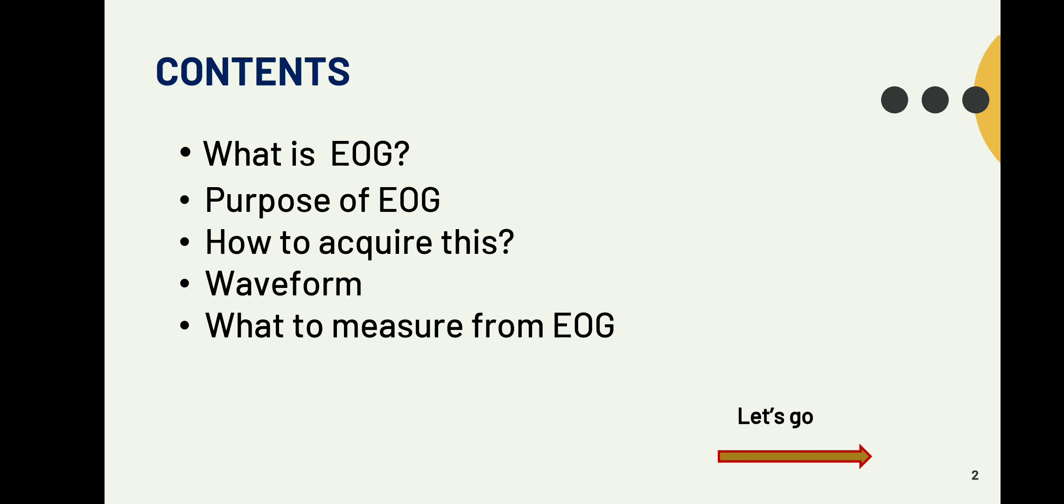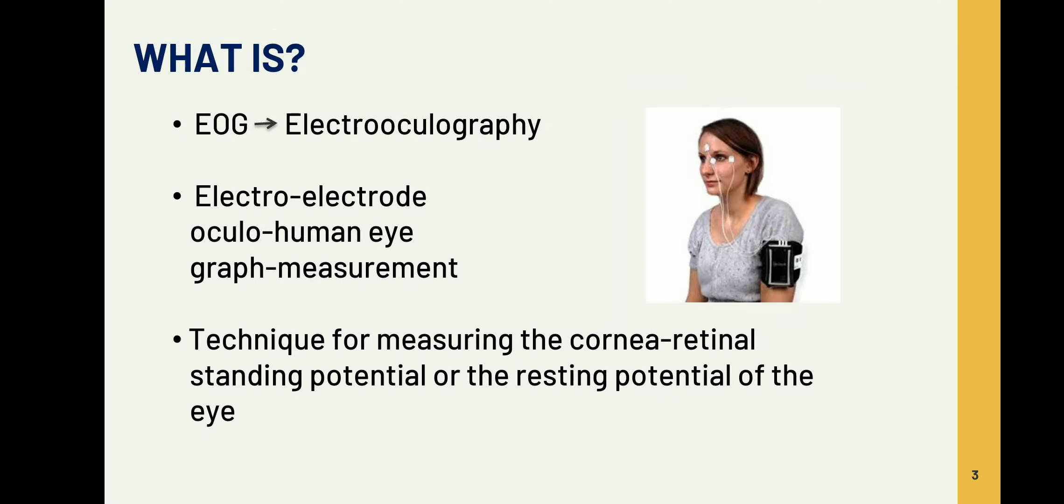First, what is EOG? EOG in the sense is electrooculography or we can say electrooculogram. First of all, electro denotes electrodes, and graph denotes some measurement that we're going to plot. Oculo denotes the human eye. So from the name itself we can understand that EOG is from the eye movements that we're going to plot in a waveform.